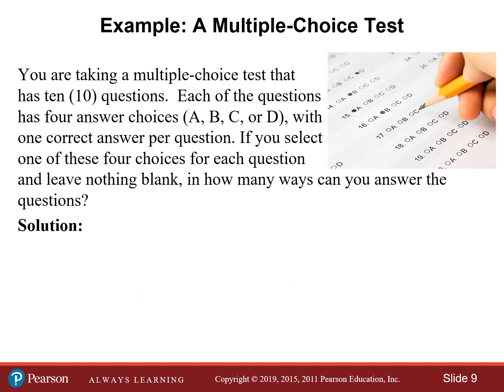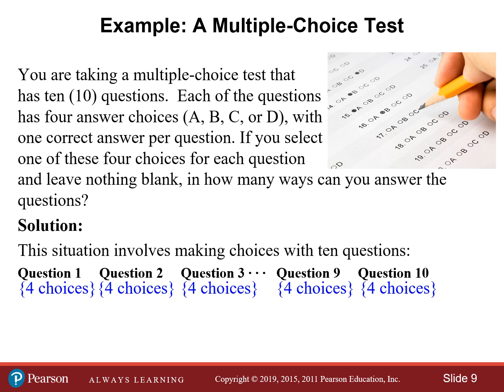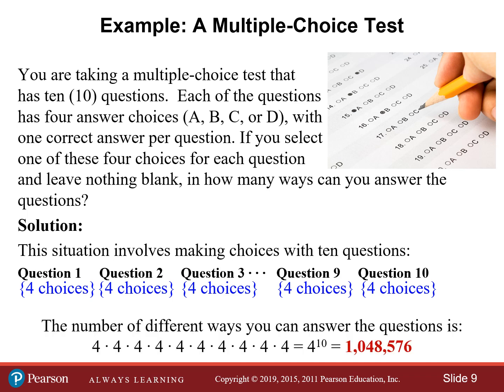Here's another example. Let's say you're taking a multiple choice test with 10 questions. Each question has four possible answer choices — A, B, C, or D — and only one answer is correct. If you select one of the four choices for each question and leave none blank, in how many ways can you answer the test? For each question you have four choices, and since there are 10 questions, it's four choices multiplied together 10 times — that's four to the tenth power, or 1,048,576 different ways of answering just a 10-question multiple choice test.